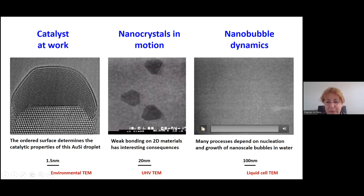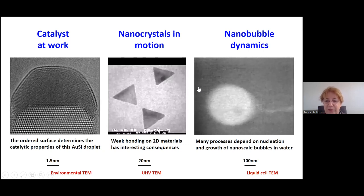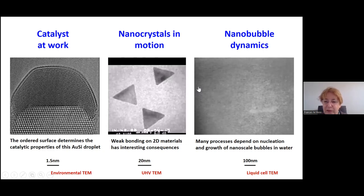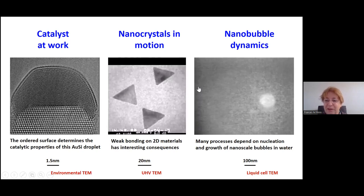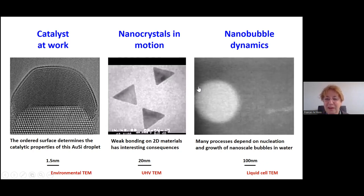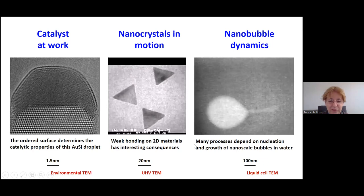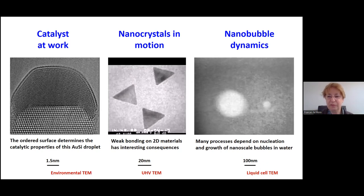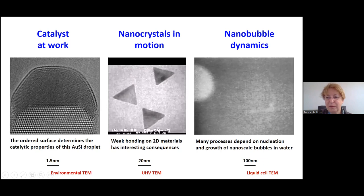Finally, I want to show an example of a process involving gas and liquid. This is nucleation, growth, and motion of bubbles filled with hydrogen within a water layer being imaged in a liquid cell in the electron microscope. Many processes depend on nucleation and growth of nanoscale bubbles in water, like catalysis, water splitting reactions, and energy storage. We need to control cavitation, corrosion, and where the bubbles form and how they move. It's also interesting to note that you don't always need atomic resolution — sometimes lower resolution coupled with temporal resolution gives you the information you want.